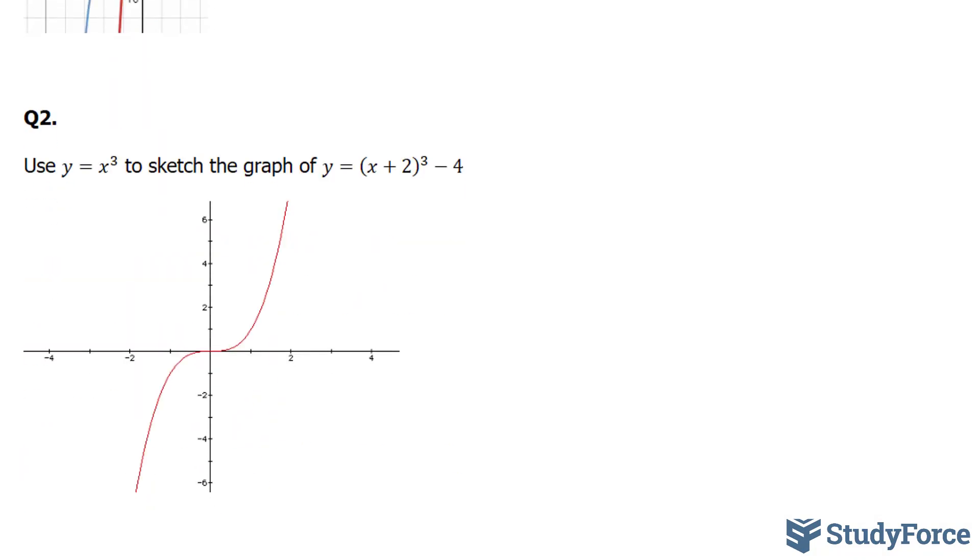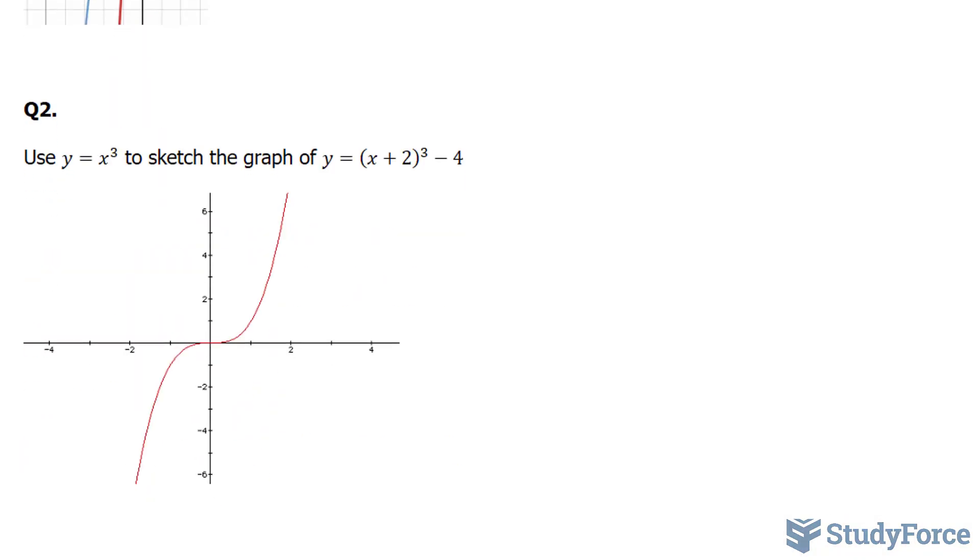Let's move on to question number 2. In question number 2, they are asking us the same thing, but for a different function. This time our function is x plus 2 to the power of 3 minus 4. Now this plus 2 suggests that once again you'll be shifting every point to the left, and this minus 4 suggests that you'll be shifting every point downwards by 4. So let's see if we can represent that in this curve.